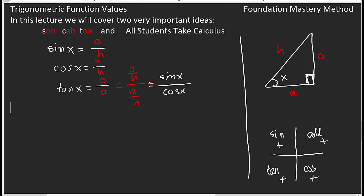We are considering X as an acute angle, and later this will be considered as a reference angle. Those reference angles will be in standard form: 0, 30, 45, 60, and 90 degrees. If you know sine X and cosine X, you can easily find tangent X. If you are in the third quadrant, sine and cosine are both negative. In the fourth quadrant, tangent and sine will be negative.